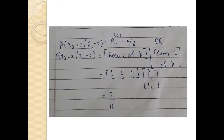For the second part, P(X3=2 | X1=2) = P22 raised to 2, since the difference is 2 steps. The answer is 2/16. We can verify by computing row 2 of P times column 2 of P: row 2 of P is [1/2, 1/4, 1/4] and column 2 of P is [0, 1/4, 1/4], giving 2/16.